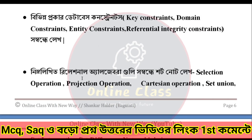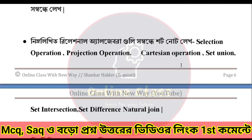Next: relational algebra — short note: selection operation, projection operation, Cartesian operation, set union, set intersection, set difference, natural join — same as the number.